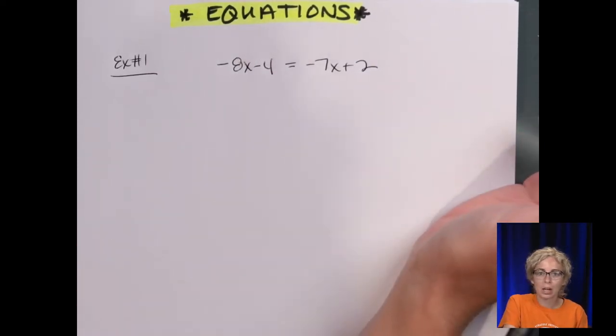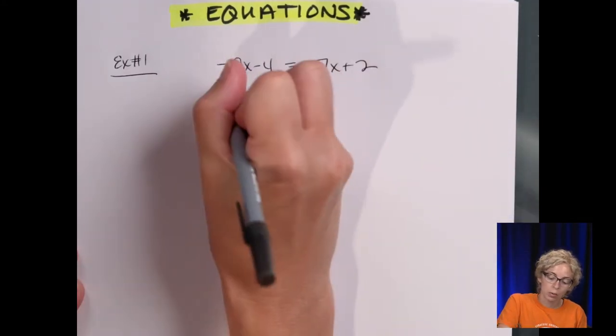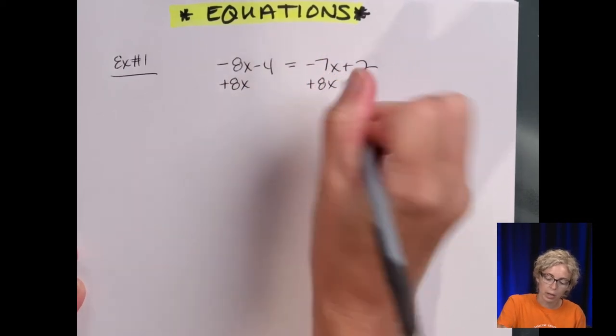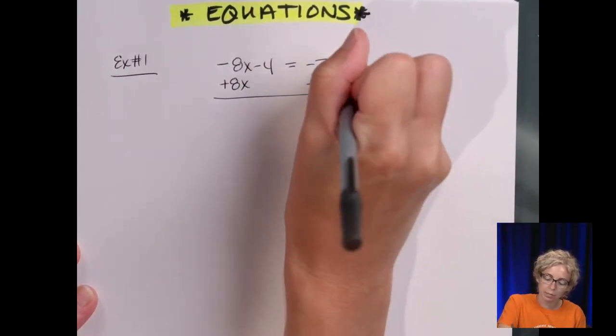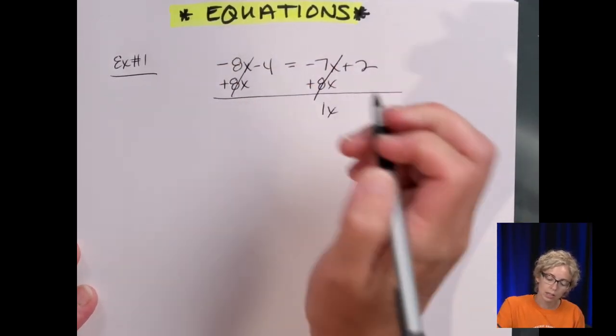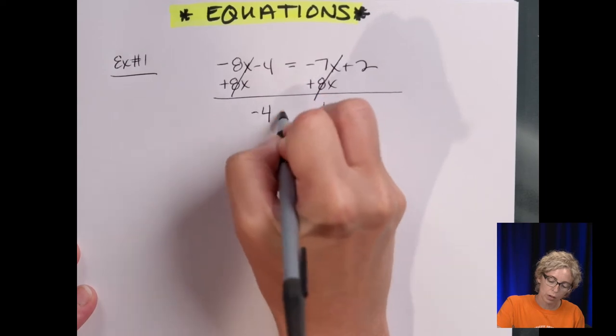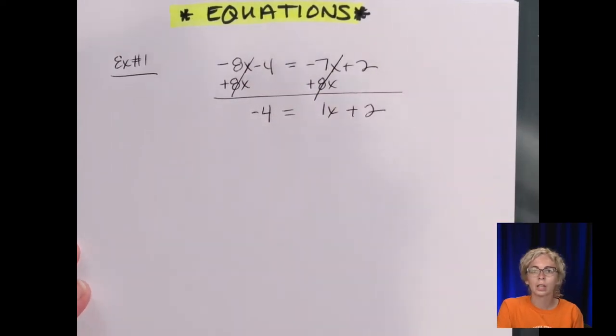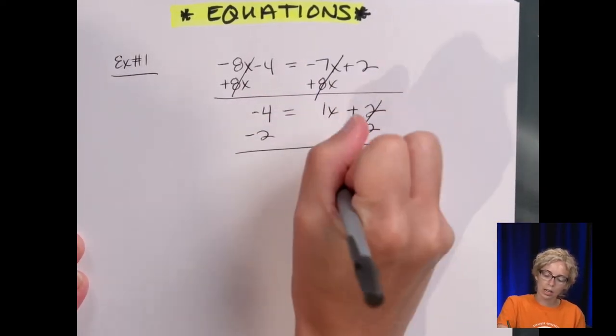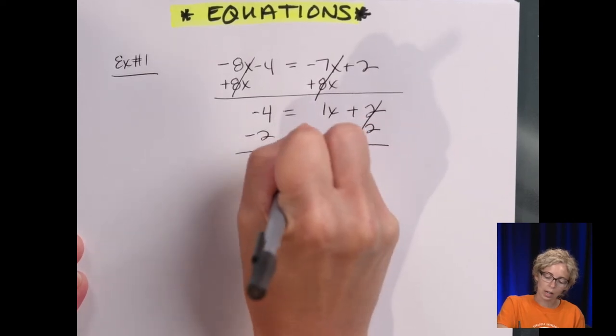And again, keep in mind there are many different ways to solve this equation. So I'm going to start by adding 8x to both sides, so that I end up with a positive number of x's. And I end up, that's going to be 1x. And this is going to cancel, so we get -4 = 1x + 2. Now you don't have to write the coefficient of 1, because if it was just x alone, the coefficient is understood to be 1. So I'm going to subtract 2.